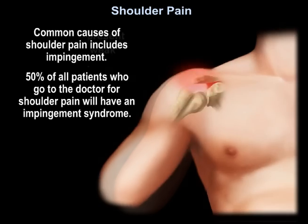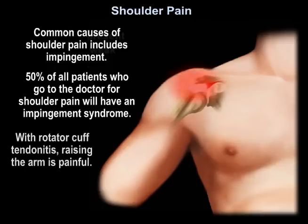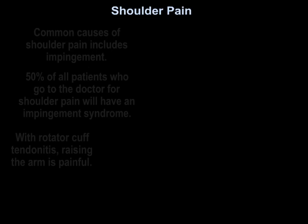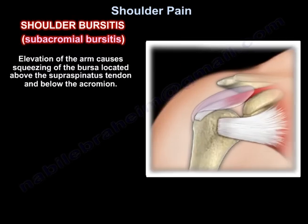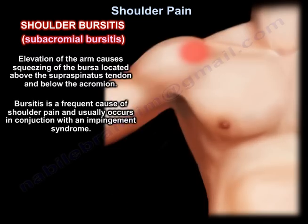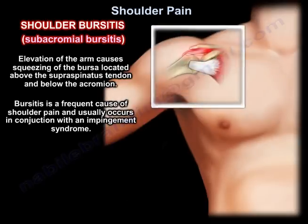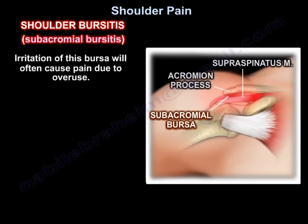Common causes of shoulder pain include impingement. 50% of all patients going to a doctor for shoulder pain will have an impingement syndrome. With rotator cuff tendinitis, raising the arm is painful. Elevation of the arm causes squeezing of the bursa located above the supraspinatus tendon and below the acromion. Bursitis is a frequent cause of shoulder pain and usually occurs in conjunction with an impingement syndrome. Irritation of this bursa will often cause pain due to overuse.